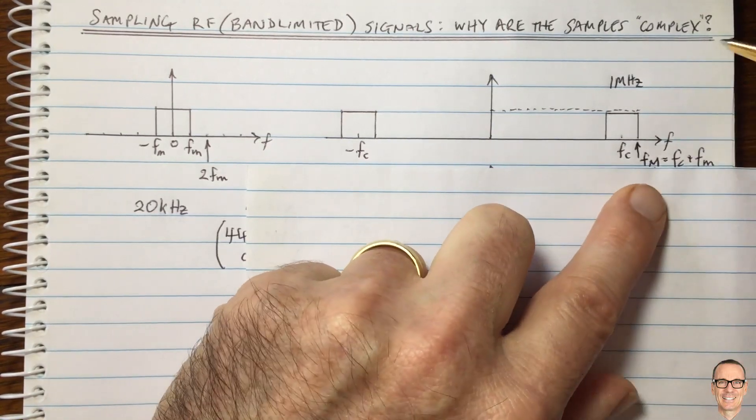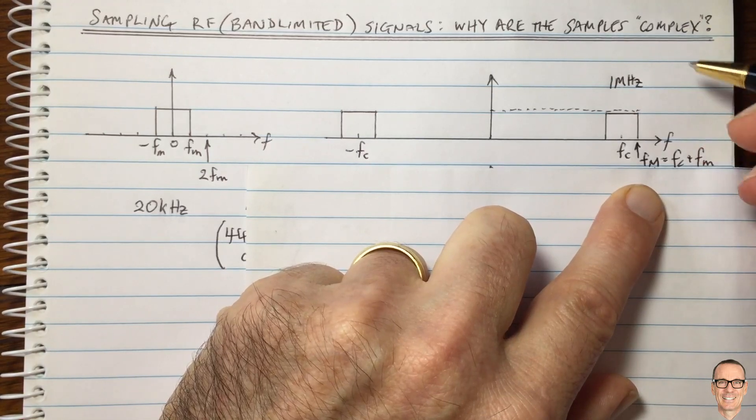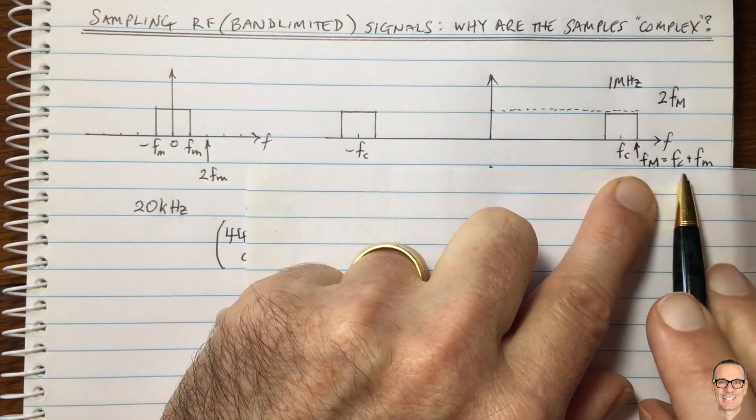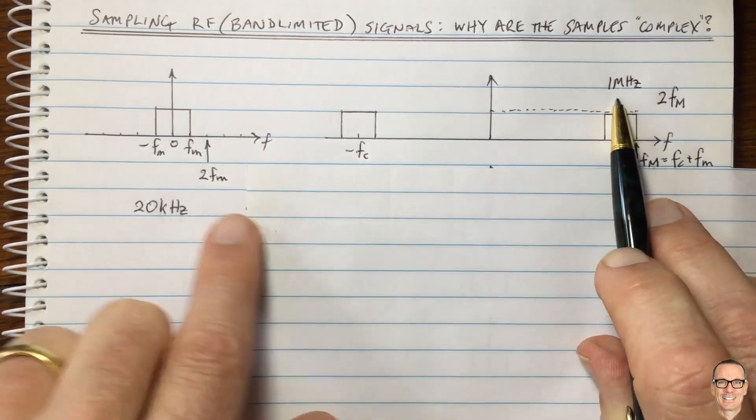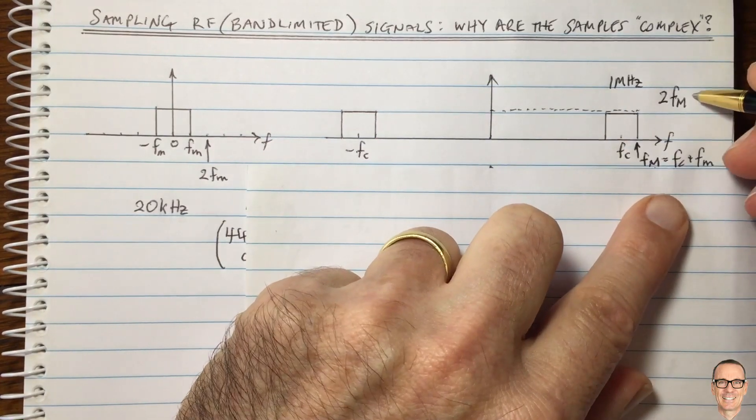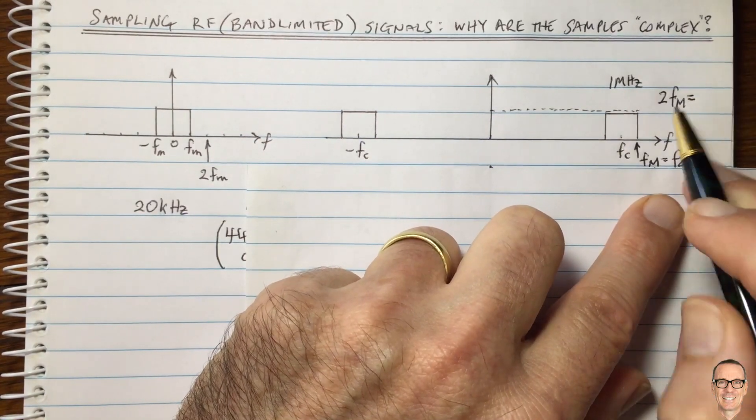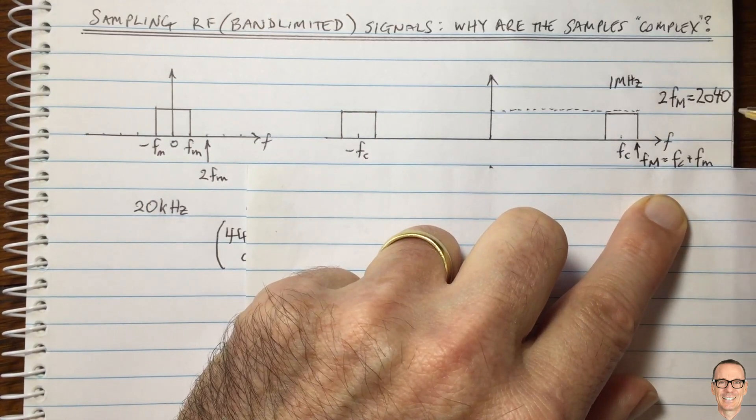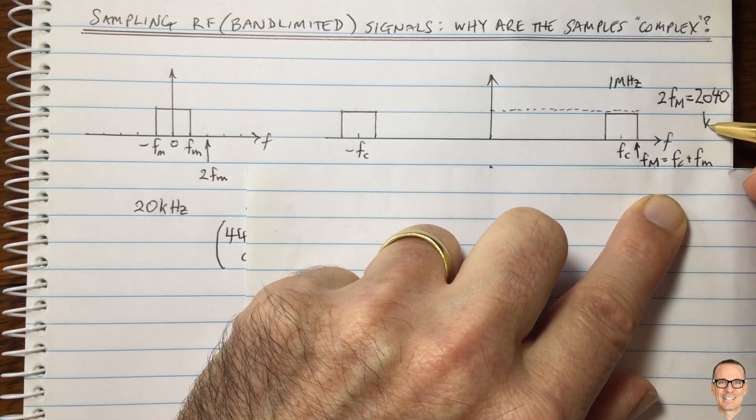Now, let's think about this example here. So if we had 2 times FM as our sampling frequency, then FM in this case equals 1 megahertz plus 20 kilohertz. So then this would equal 2 times that, which would equal 2,040 kilo samples per second.